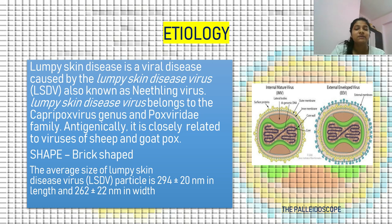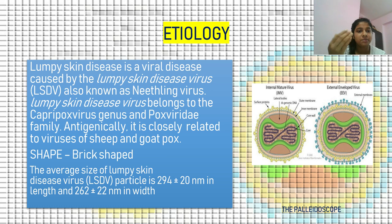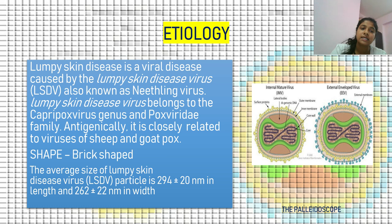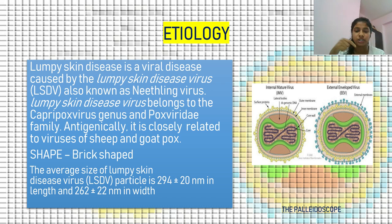Etiology: Lumpy skin disease is caused by lumpy skin disease virus, also known as Neethling virus. It belongs to the Capripoxvirus genus and the family Poxviridae. Antigenically it is closely related to the viruses of sheep and goat pox because of the genus Capripoxvirus. The shape of the virus is brick-shaped; the average size is 294 ± 20 nm in length and 262 ± 22 nm in width.